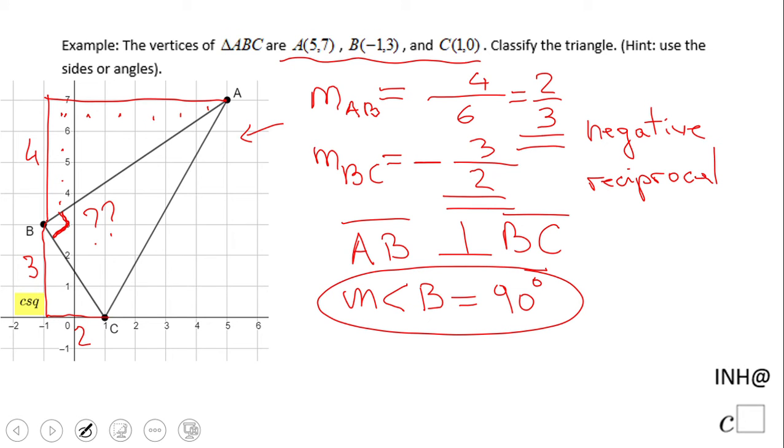Which means for us that the triangle, in fact, ABC is a right triangle. Now some of you may say, I want to look at the sides.